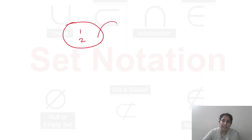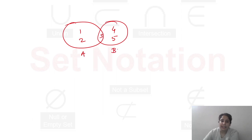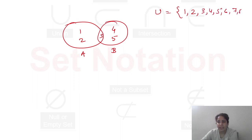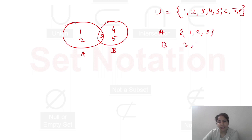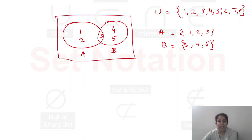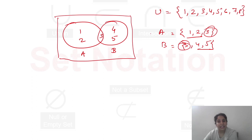अब मैं आपको next slide पे समझाती हूँ कि 1 and 2 is given, and 4, 5 is given और 3 is common. यह A है, यह B है। Universal Set is given: 1, 2, 3, 4, 5, 6, 7 and 8. A में 1, 2, 3 हैं। B में 3, 4 and 5 हैं। A अकेले के पास 1, 2 है। B अकेले के पास 4, 5 है। दोनों के पास 3 है। Easily you can get a glance through the diagram. अब which elements are in the Universal Set but not in A and B — वो है 6, 7 and 8.